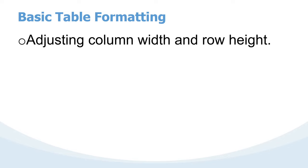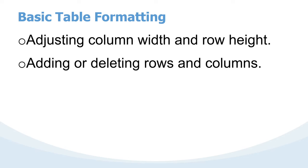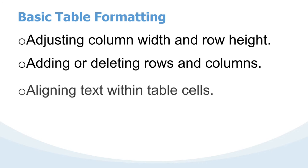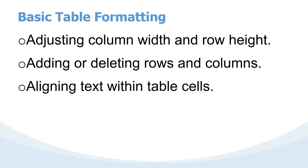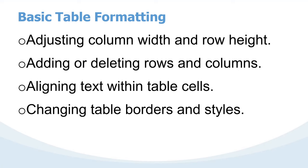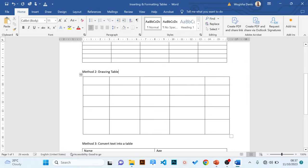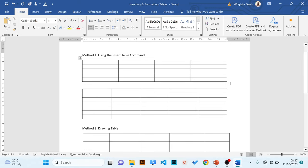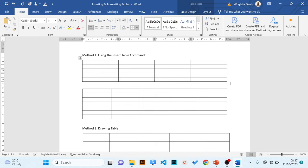Let's begin with the basics of formatting. First, I'll explore how to adjust column width and row height. Then we'll look at how to add and delete rows and columns. Then we'll explore how to align text within the table, and conclude with changing table borders and styles.